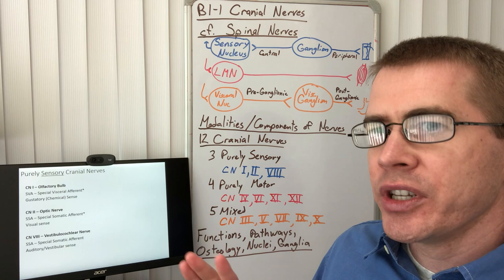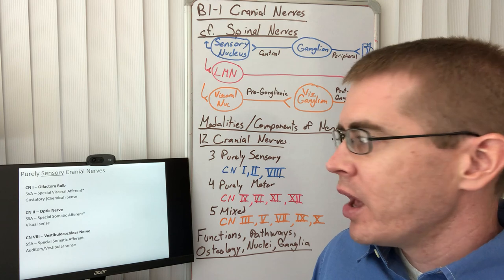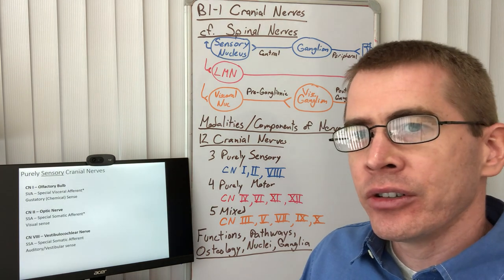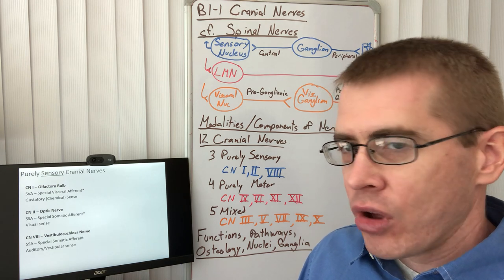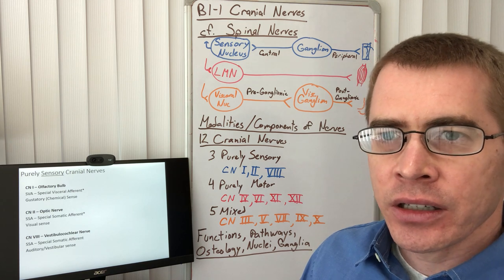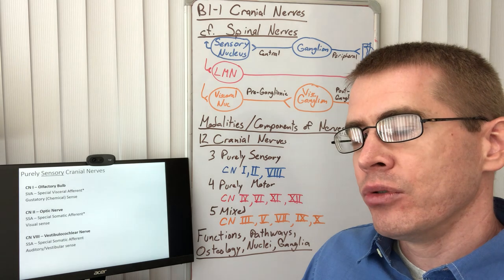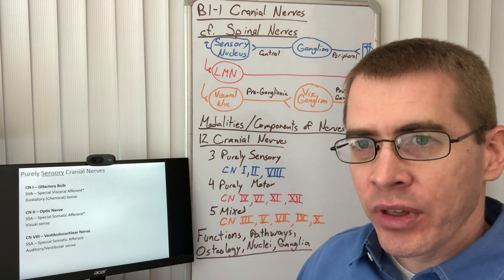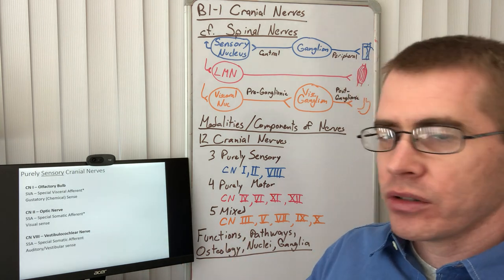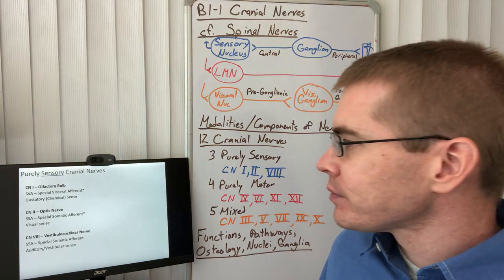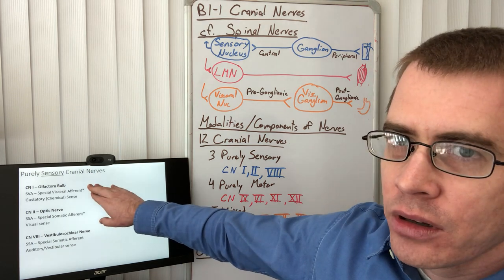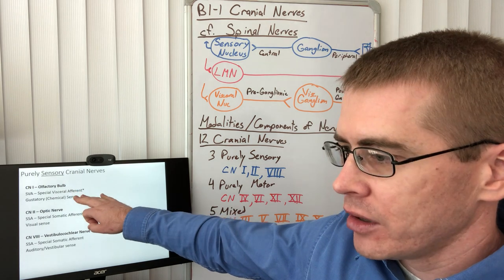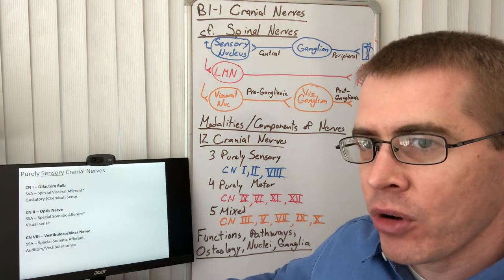The purely sensory cranial nerves are cranial nerves I, II, and VIII. When numbering cranial nerves, the convention is to use Roman numerals. The olfactory bulb is the first cranial nerve and contains olfactory chemical senses — the sense of smell. The optic nerve is the visual sense, carrying SSA fibers. The vestibulocochlear nerve carries SSA fibers for auditory and vestibular balance and hearing.